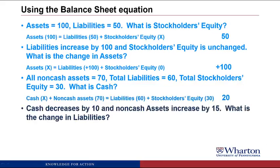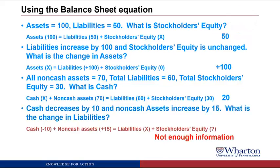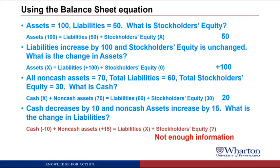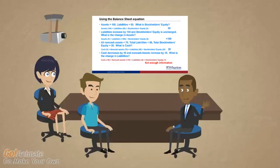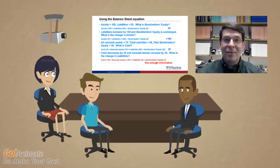Problem 4: Cash decreases by 10 and non-cash assets increase by 15. What is the change in liabilities? We split assets into cash and non-cash, but we have to be careful. Cash is going down, non-cash assets going up — the net change is an increase in assets of 5 on the left. We're looking for liabilities, but we don't know what happened with stockholders' equity. Because we don't know what happened with stockholders' equity, we actually don't have enough information to solve this. If stockholders' equity hadn't changed, liabilities would have to go up by 5 — but unless we know that, we can't solve this. Sorry about the trick question, but it won't be the last.